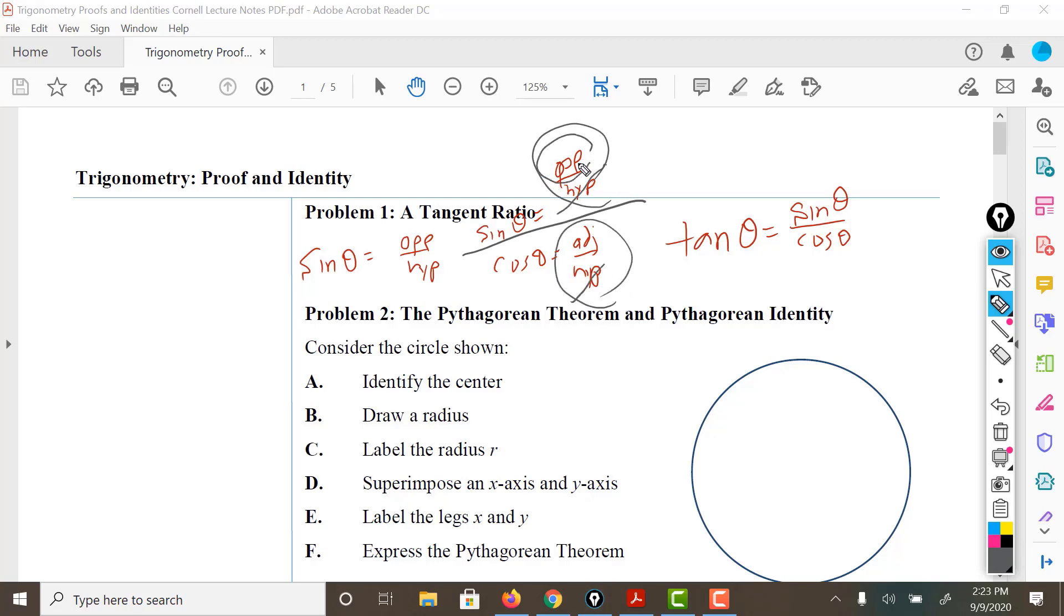leaving the opposite over adjacent. But by definition, opposite over adjacent is tangent. So in other words, what we just did is we proved that tangent of theta is equal to sine over cosine of that same angle.